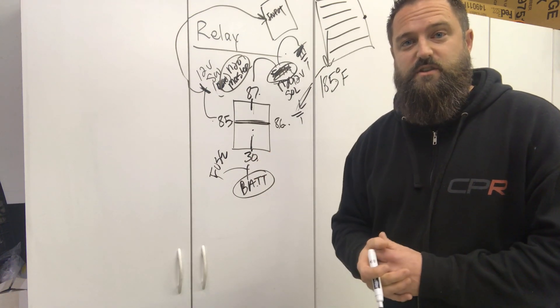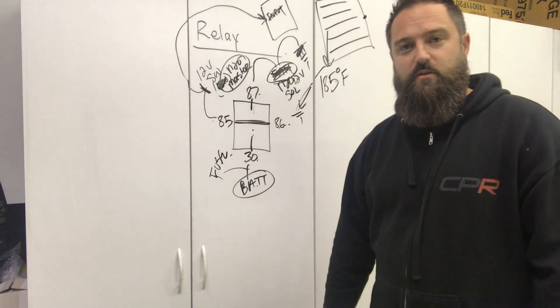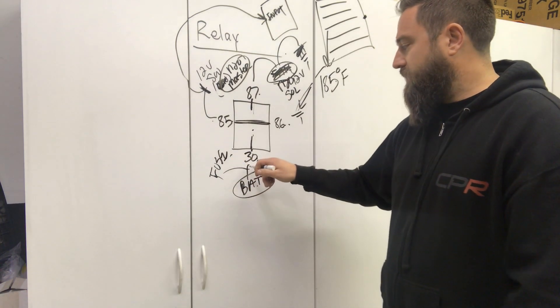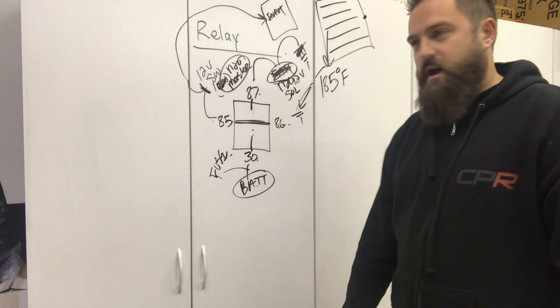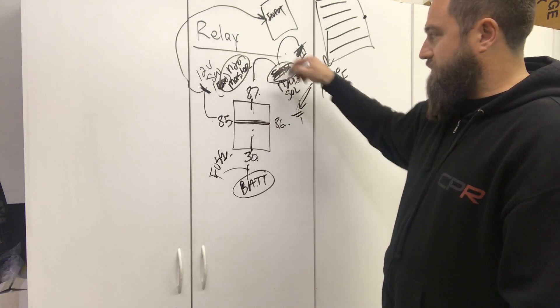Some fans have inrush current of 60 or 70 amps. So sometimes if you have a 30-amp fuse in there, you'll blow it. Make sure you're fused properly. Make sure you use the right size wire to carry that amount of current.